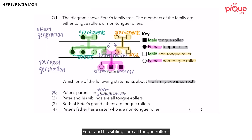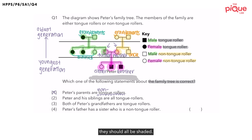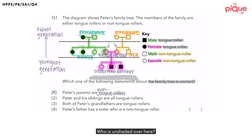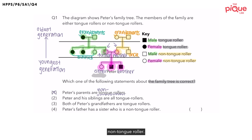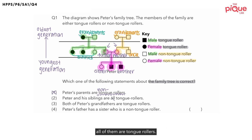Option two: Peter and his siblings are all tongue rollers. If this were true, they should all be shaded. But they are not all shaded — the sister is unshaded, which means she is a non-tongue roller. So this statement is false because not all of them are tongue rollers. Option two is wrong.